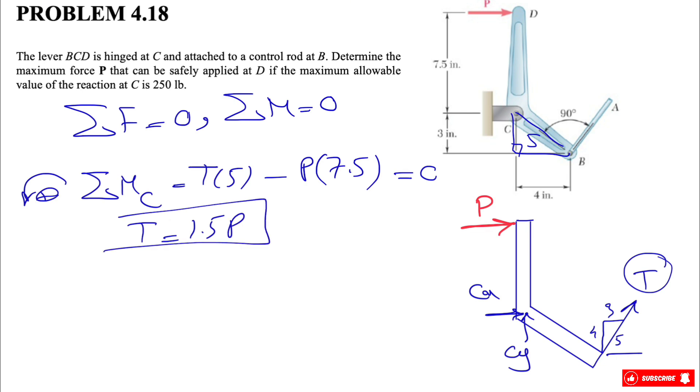That's what we get from the moment about point C. Let's go to our Fx equations. This will be our positive direction. We have the force P to the right, so positive P. We have Cx, and we have the x component of T, which will be 3 divided by 5 times T. From here, we found T is 1.5P, and we can find Cx based on P.